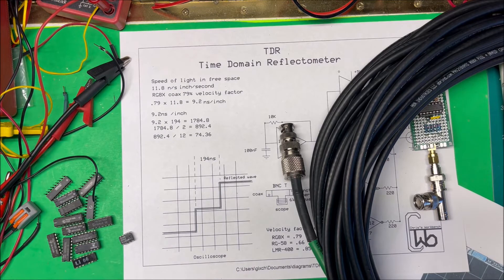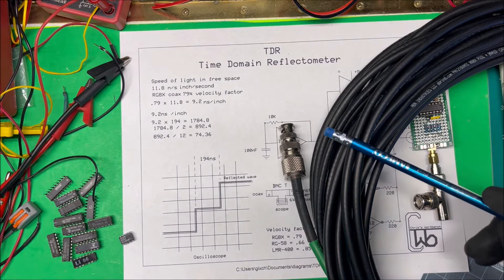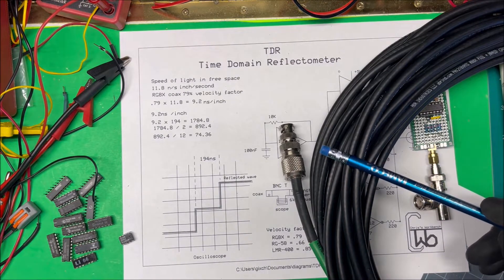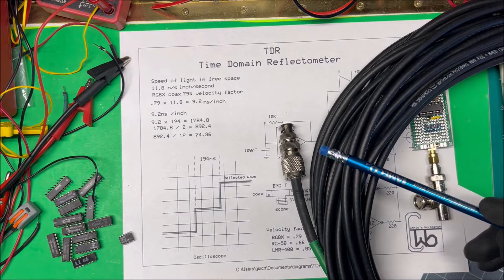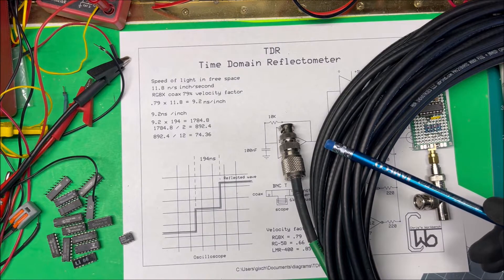Let's take a look at a TDR, a time domain reflectometer. I've got a piece of coax here, this happens to be RG8X, it's 50 ohm coax, and I want to be able to determine the length of the coax.